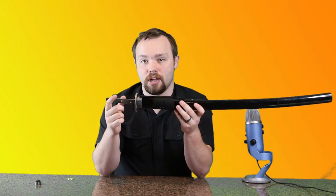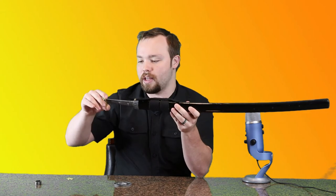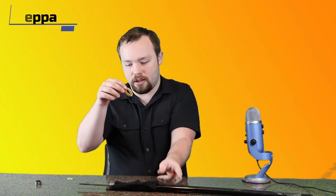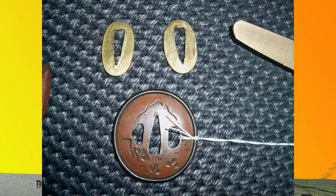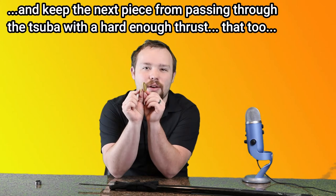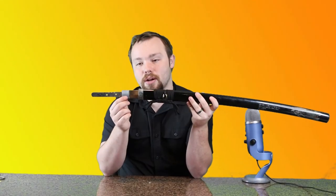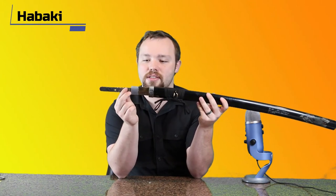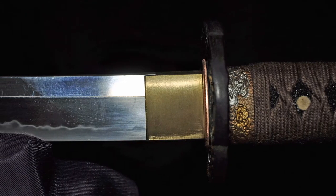The next piece is this right here. There's actually one of these on both sides of the tsuba, and it's called a sepa. There's two of these, and they basically are like washers that would be put on both sides of the tsuba. One closer to the hilt and one closer to the blade. Now, the next piece is this piece right here. This is called the habaki.